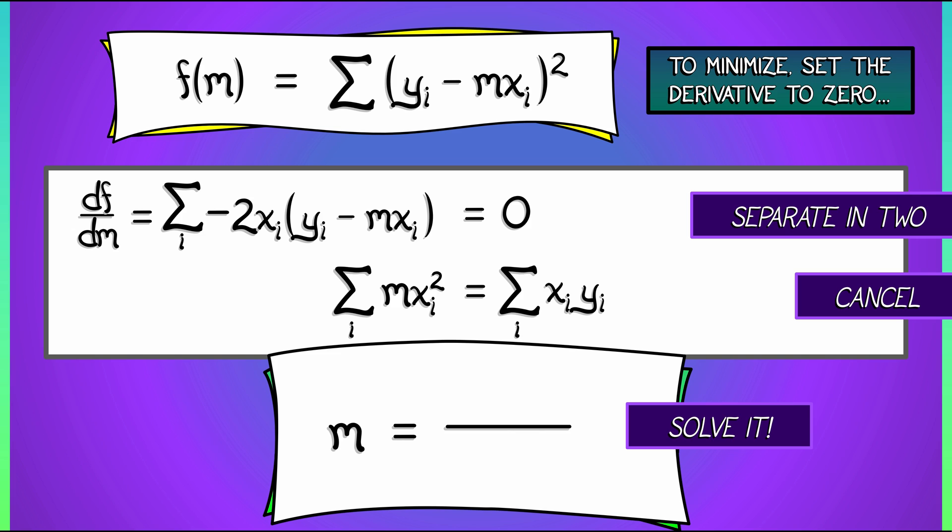m, the optimal slope, is equal to the sum over i of xi times yi divided by the sum over i of xi squared. And that is it. That is the slope of your best fit line.